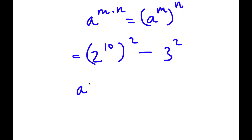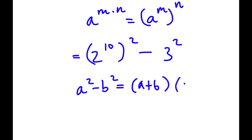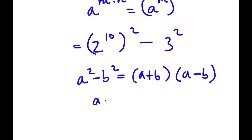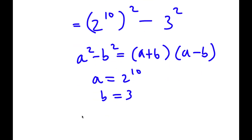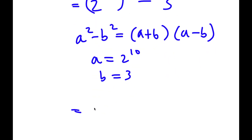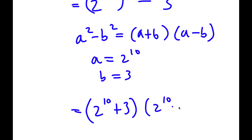Now I have something in the form a squared minus b squared, which equals a plus b times a minus b. In this case, a is 2 to the power of 10 and b is 3. So I have 2 to the power of 10 plus 3 times 2 to the power of 10 minus 3.